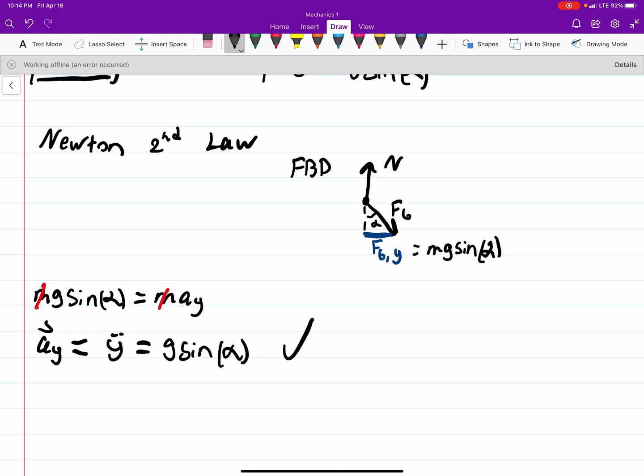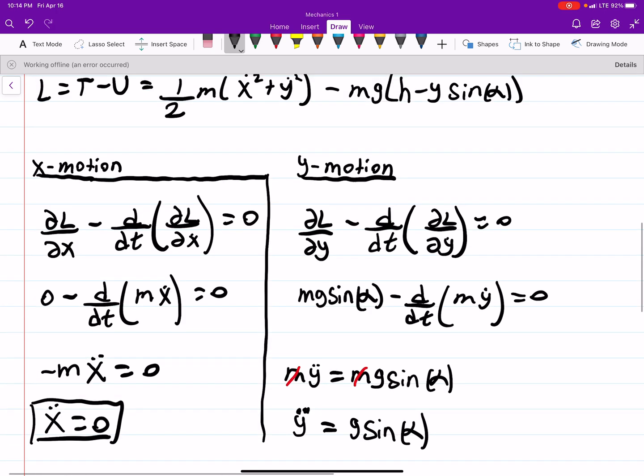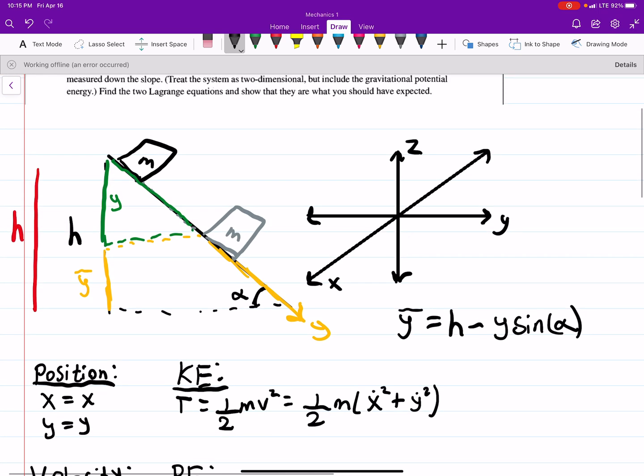So the same thing we would get from a physics 1 problem we get using Lagrangian equations. And eventually we're going to do problems where, I mean at this point it's probably easier to do Newton's laws, but very soon with these problems they're going to be much more difficult to use Newton's laws and those will be coming up soon.